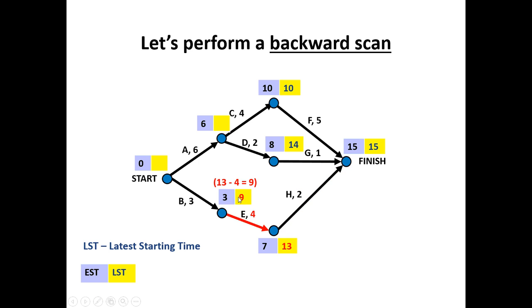Thirteen minus four gives me nine. Ten minus four gives me six. However, you'll notice, if we're working backwards, there's activity D to consider as well. Fourteen, take two, gives me twelve. Now I've got two options here. When we're performing a backwards scan, instead of taking the largest value, we take the smaller of the two. So always pick the smaller option, so we choose path C, which is six.